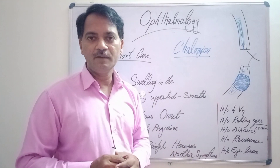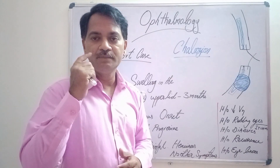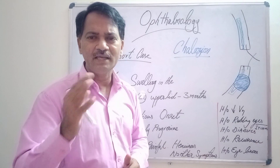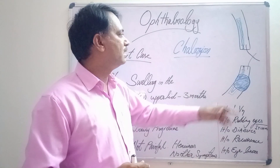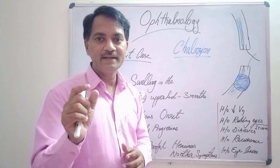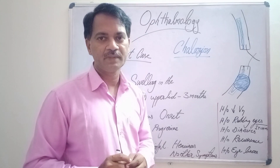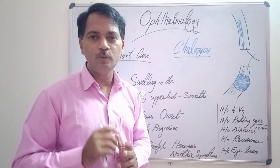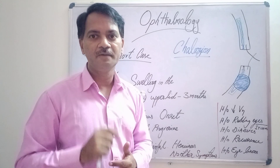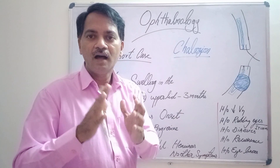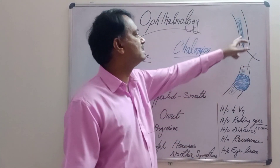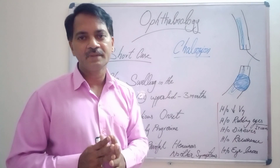Whenever there is a mild inflammation in the lid margin along with a mild infection, the meibomian gland duct gets closed. The meibomian gland, which secretes the sebaceous or oily secretion of our tear fluid, will then accumulate lipid secretion inside.